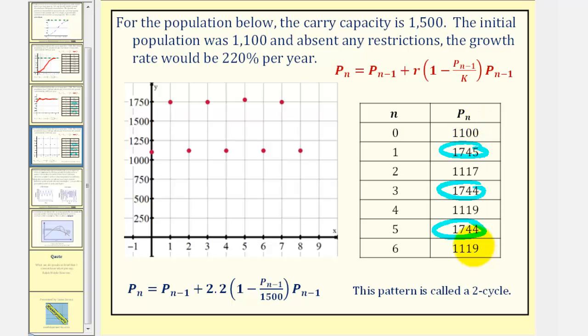But analyzing this more closely, notice how it does appear that the population levels are bouncing back and forth between one population level above the carrying capacity and one population level below the carrying capacity. If we plot these points on the coordinate plane, it becomes even more obvious.